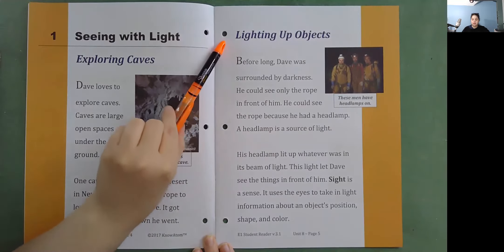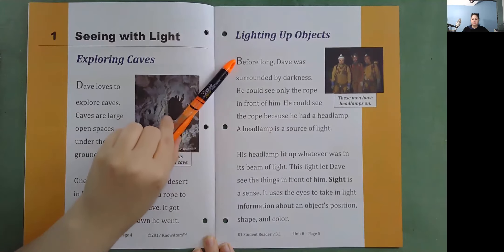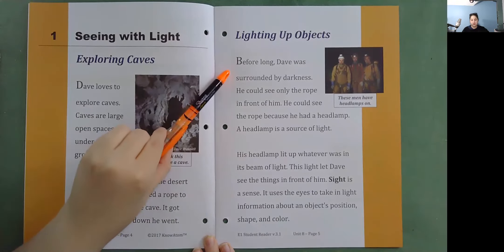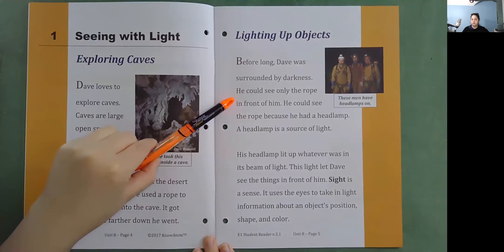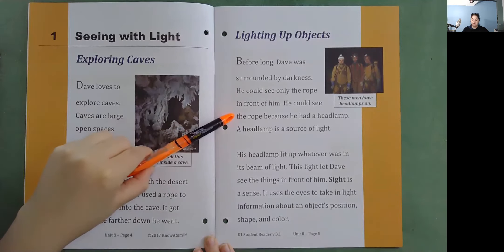Lighting up objects. Before long, Dave was surrounded by darkness. He could see only the rope in front of him. He could see the rope because he had a headlamp.